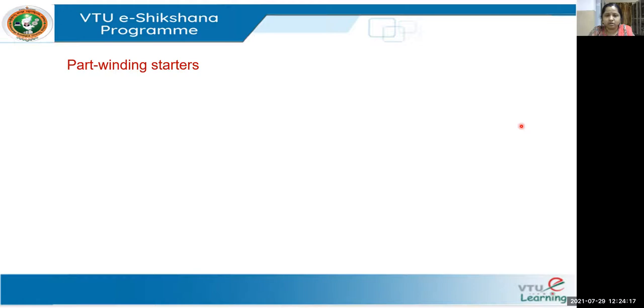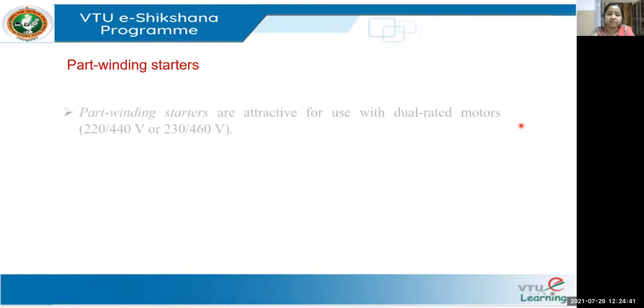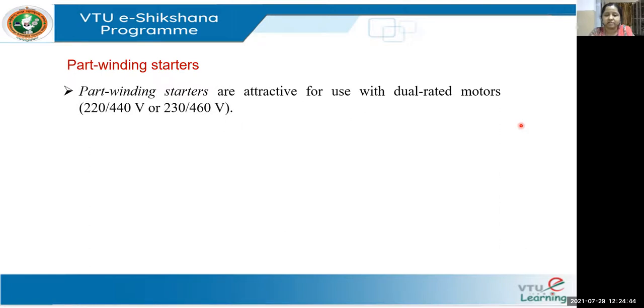Next, coming to part winding starters. These starters are used for part winding motors — motors which have dual ratings. Usually we see motors with a single rating, but these motors have a dual rating and their stators have two windings. Since the motors are called part winding motors, the starters used to control the inrush current of such motors are also called part winding starters.